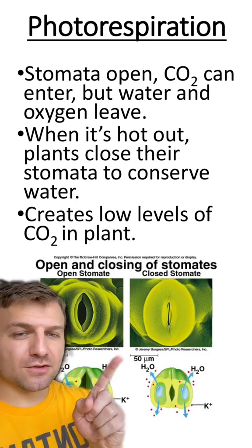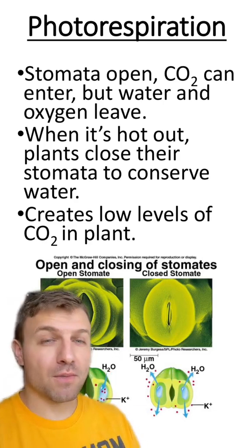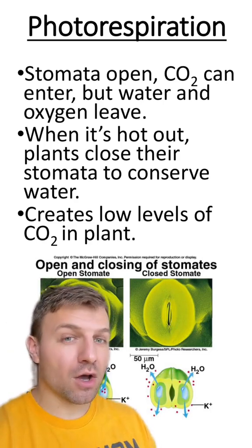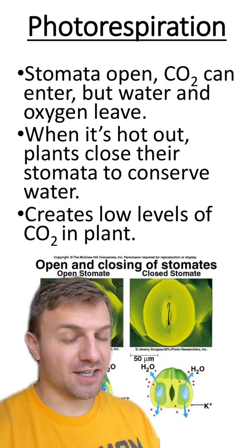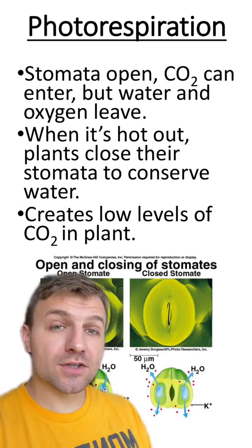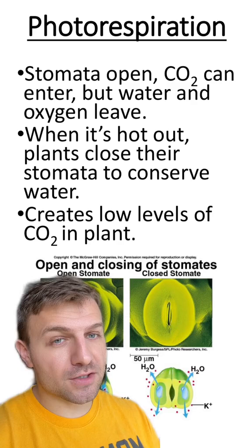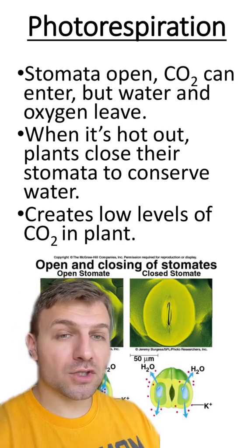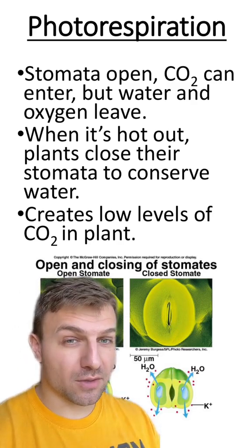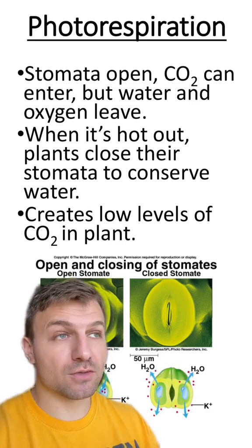Plants have these structures on the underside of leaves called stomata. Stomata allow CO2 in, and also allow water and oxygen to leave. When it's hot outside, the plants will close these stomata to prevent water loss. But if a plant closes its stomata for too long, oxygen levels will rise and CO2 levels will go down, because the plant is using up that CO2 to make glucose.